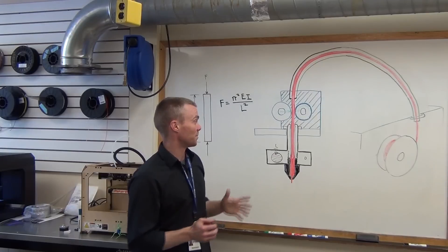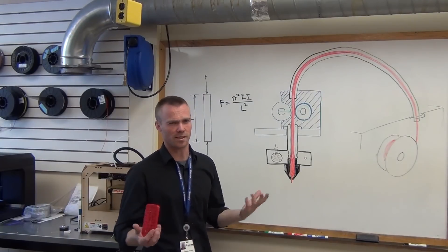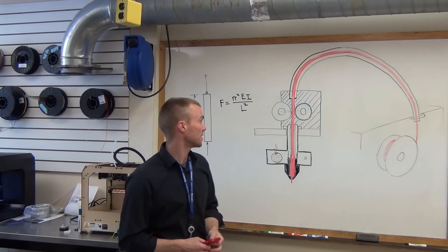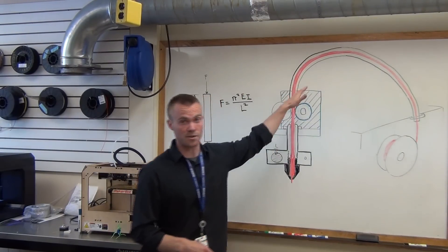So what can go wrong with this system when we're printing with NinjaFlex? Or what other considerations do we have to take into account that we wouldn't with rigid materials? That's what we'll get into next, starting with the guide tube.